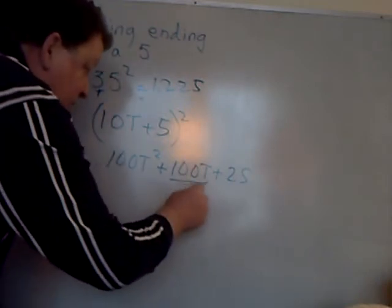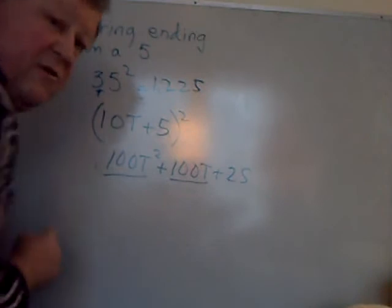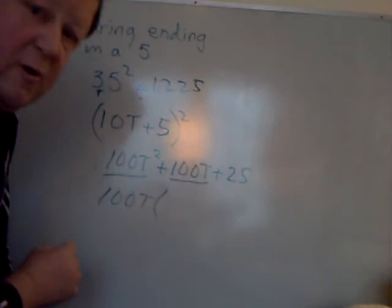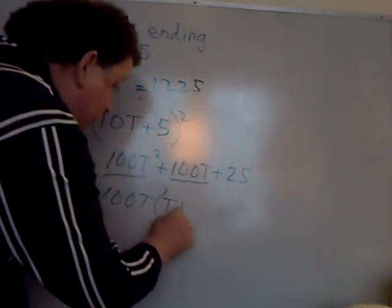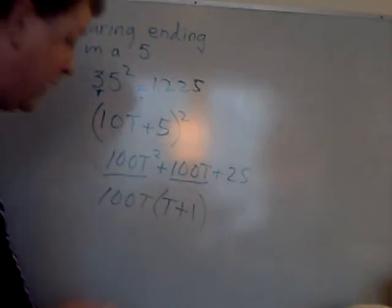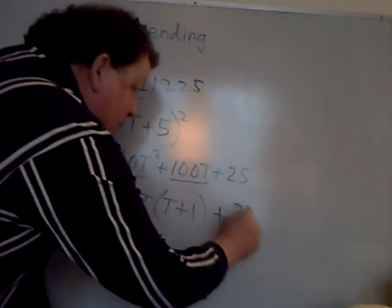This is 100t times 1. This is 100t times t. So I'm going to factor out a t plus a 1. So I factor out 100t, and that leaves me with t plus 1, and 25.